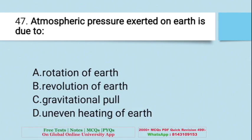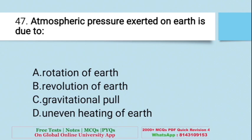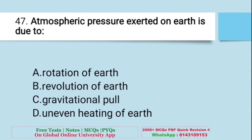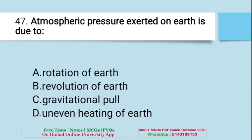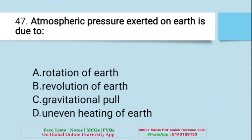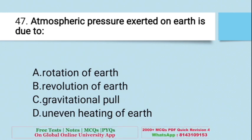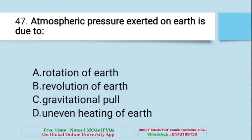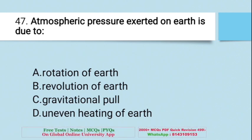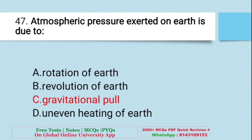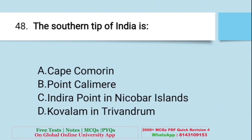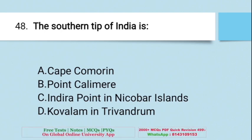Question: Atmospheric pressure exerted on Earth is due to — A. Rotation of Earth, B. Revolution of Earth, C. Gravitational pull, D. Uneven heating of the Earth. The right answer is C — Gravitational pull. Also: The southern tip of India is — A. Cape of Comorin, B. Point Calimere, C. Indira Point in Nicobar Island, D. Kovalam in Trivandrum. The right answer is C — Indira Point in Nicobar Island.